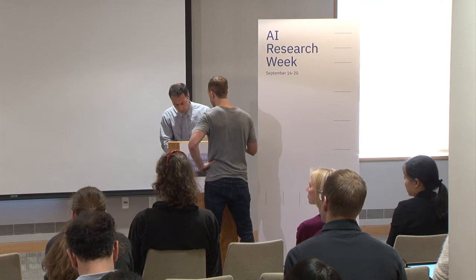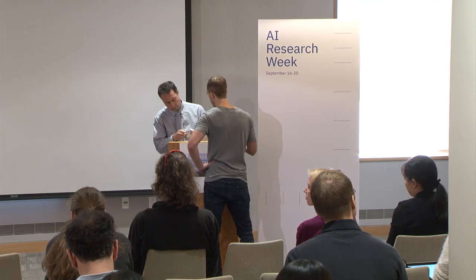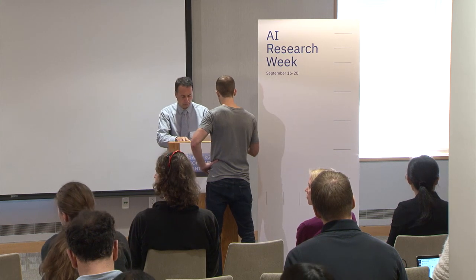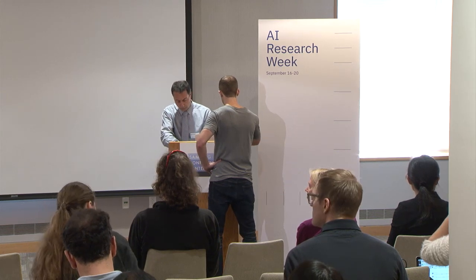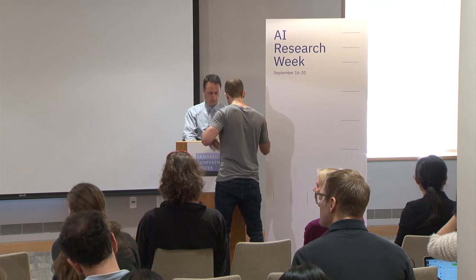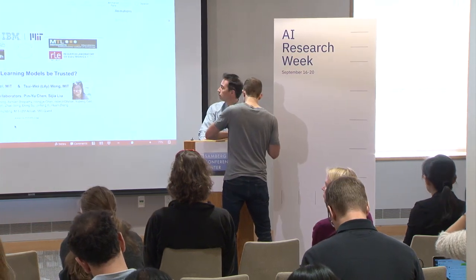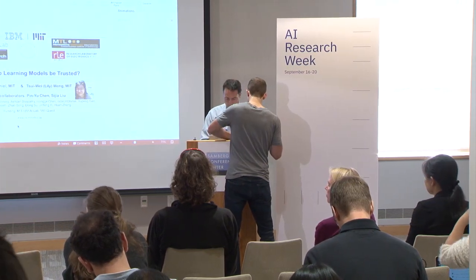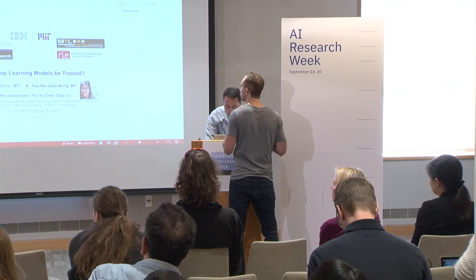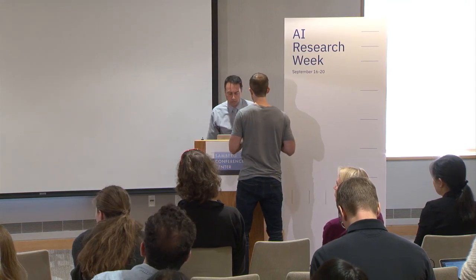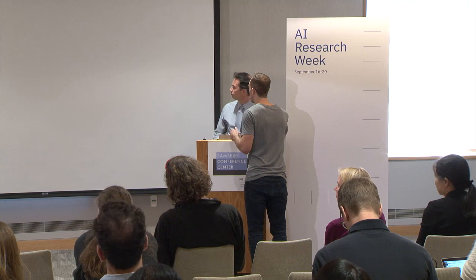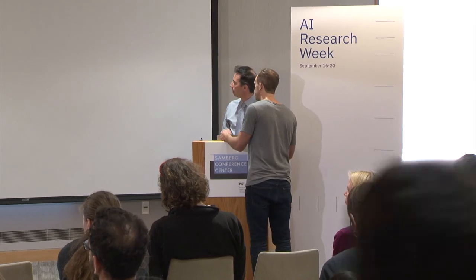Our next speaker is Professor Luka Danyu from MIT. Luka has a PhD from UC Berkeley in 2003. He has been working on many research areas, spanning from micro-technics to deep neural network-based applications. Today he is going to talk about how to quantify the lack of robustness in neural networks.